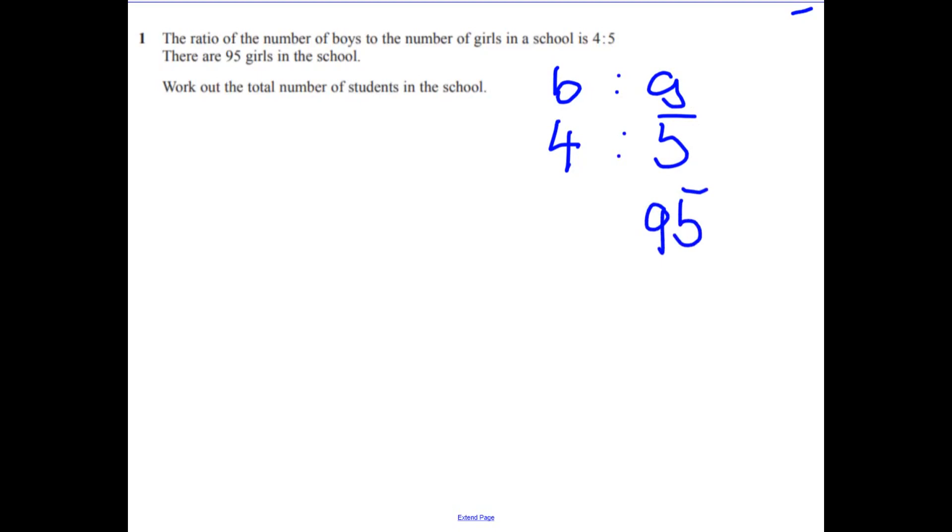So we've got to keep the ratio to be the same. So just think to yourself, what do I multiply that by to get to 95? So 5 multiplied by 19.